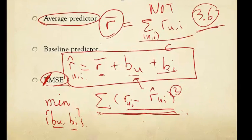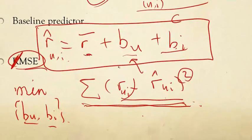The variables are the B-U-B-I's, and the given constants are the known truth R-U-I's, and this simple scalar R-bar. That describes the baseline predictor training optimization.